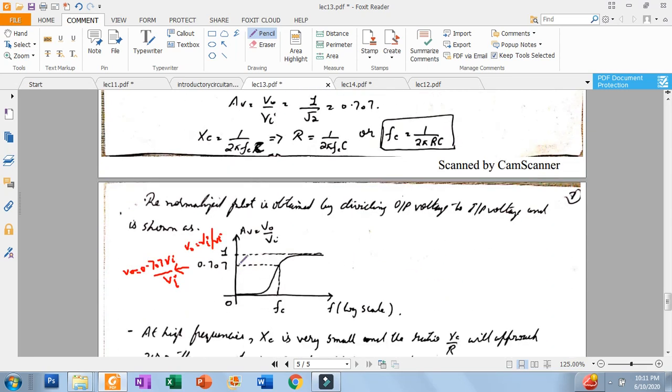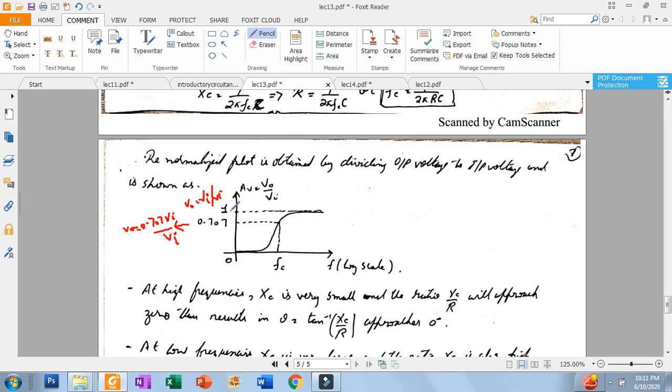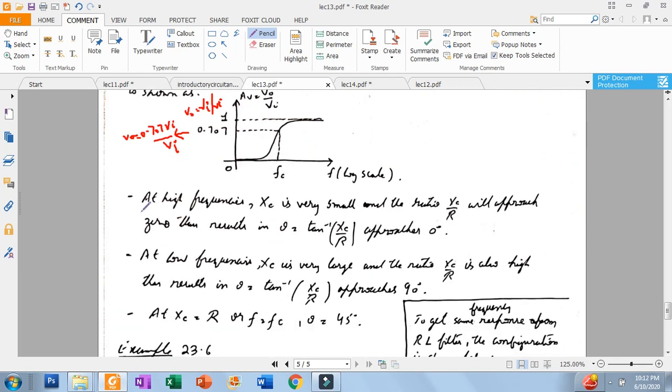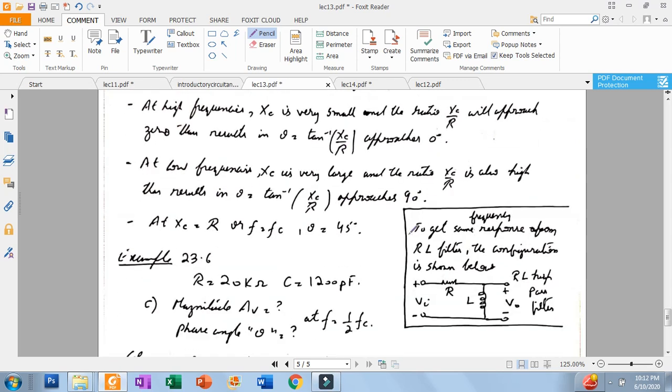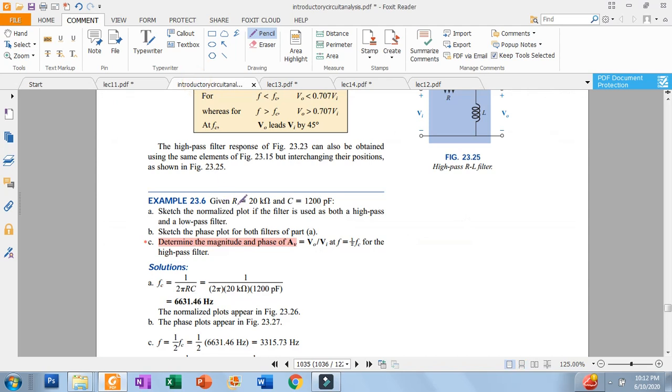For normalized plot, you divide V out over Vi to get 0.707. The higher frequency is 0 degrees and low frequency is 90 degrees. This is a normalized plot.